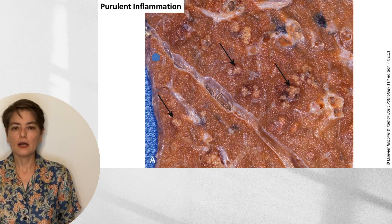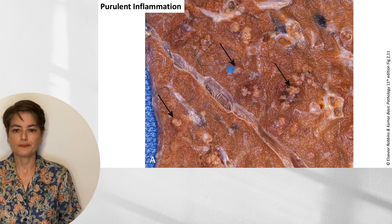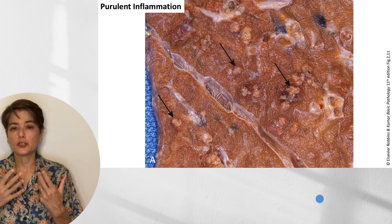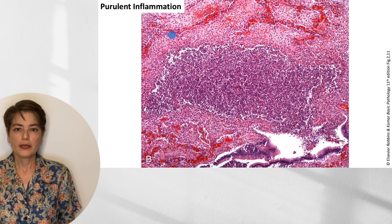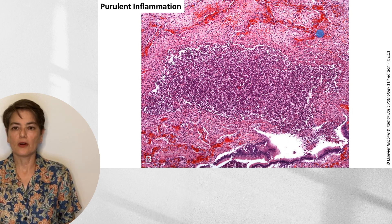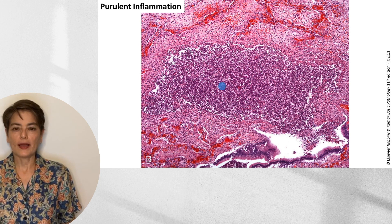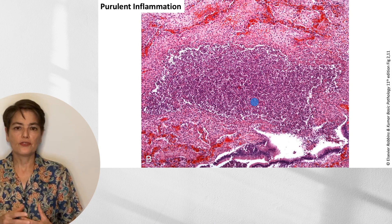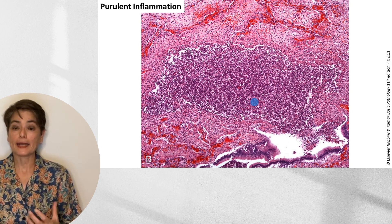This is a section of lung not fixed in formalin from an individual with bronchopneumonia, and the arrows show all of these little areas of pus collection. Microscopically, we can see residual lung — the septa of the alveoli with congested capillaries, showing the vasodilation seen in acute inflammation. In areas of necrosis, the space is filled with neutrophils. Whenever you see sheets of neutrophils, start thinking about a bacterial infection.